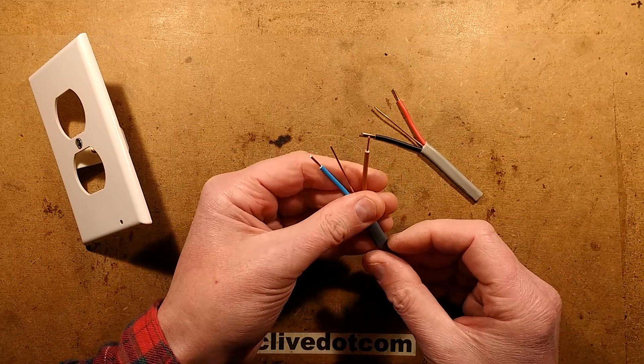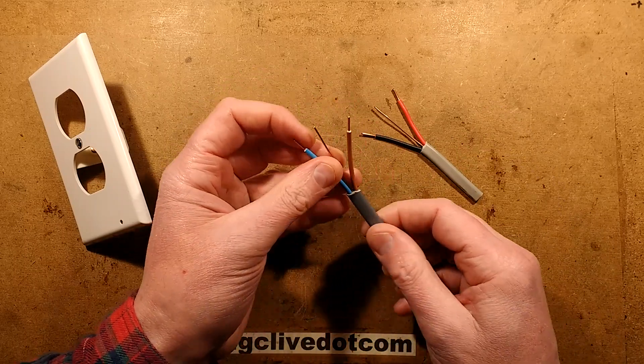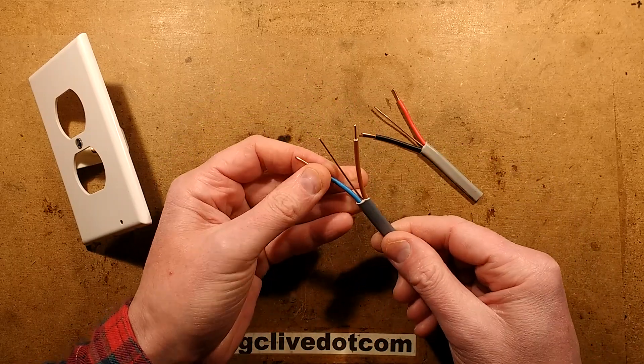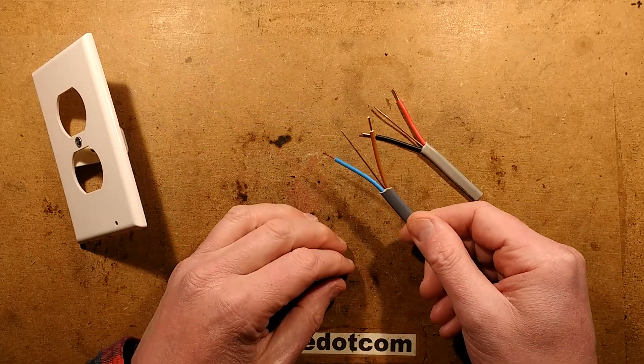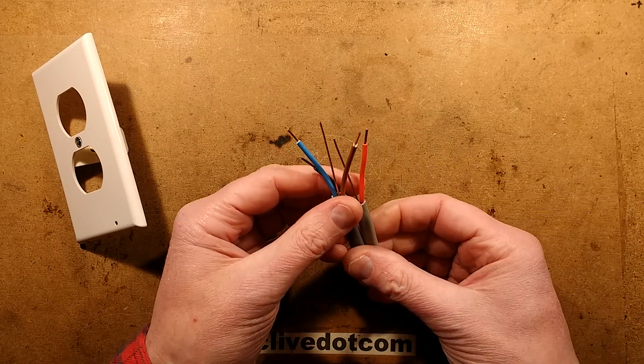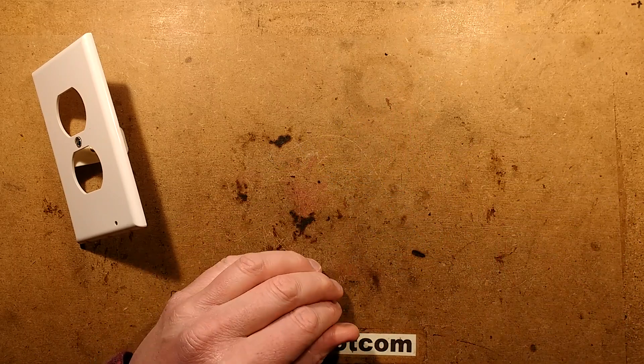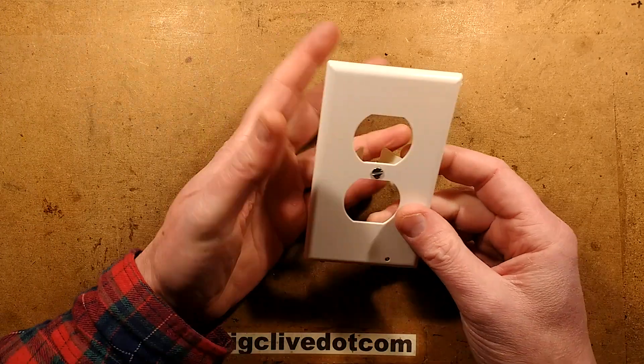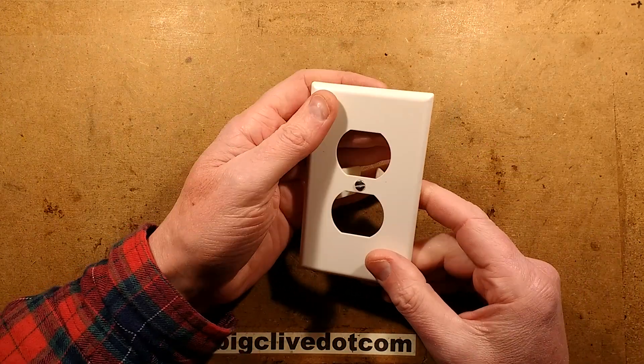The new colours to comply with European requirements are brown for live, blue for neutral, and of course the earth in the middle again of the same cross-sectional area, unsleeved. We put a little bit of sleeve over it when we terminate the cables, the green-yellow sleeve.